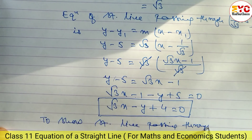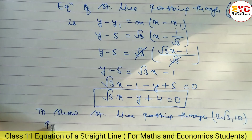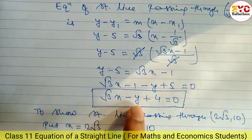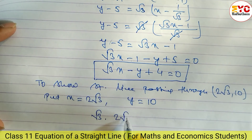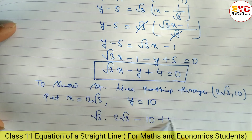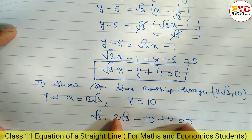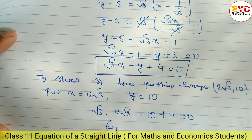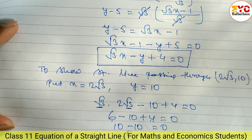Now to show the line passes through (2√3, 10), we put x = 2√3 and y = 10 into the equation. So √3·(2√3) - 10 + 4 = 0. √3 × 2√3 = 2×3 = 6. So 6 - 10 + 4 = 0, giving 0 = 0. Hence proved.